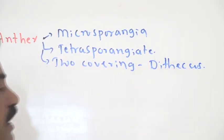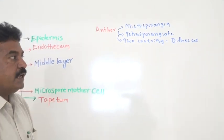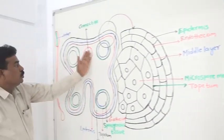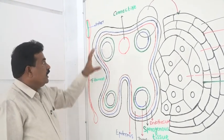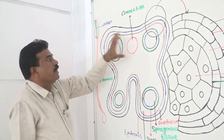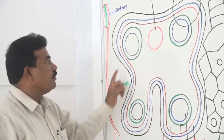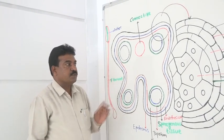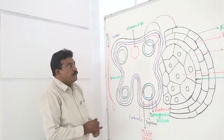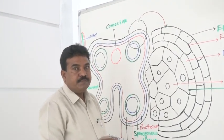If you consider a young anther, it generally has two anther lobes connected by means of a connective. Each circular part is called a microsporangium, and totally there are four microsporangia. Hence the stamen is called tetrasporangiate.